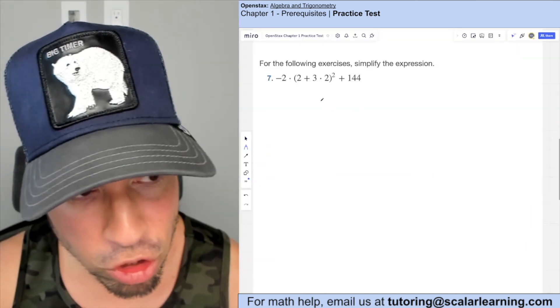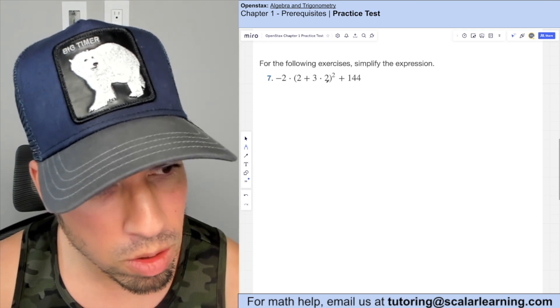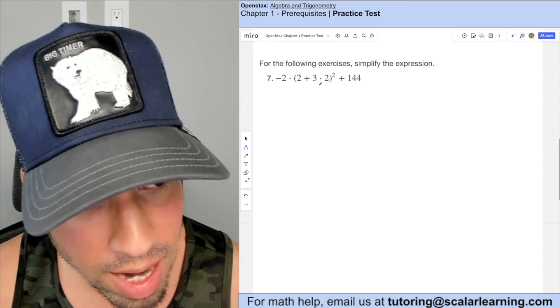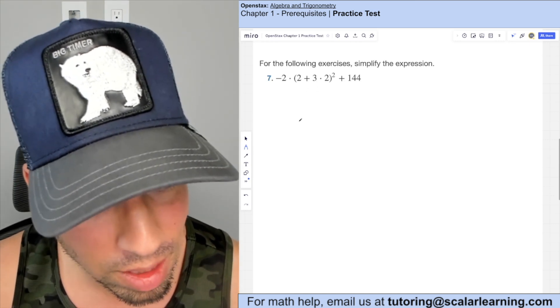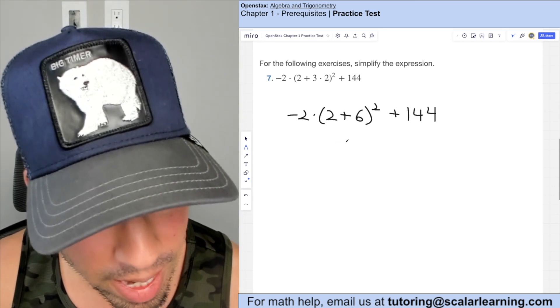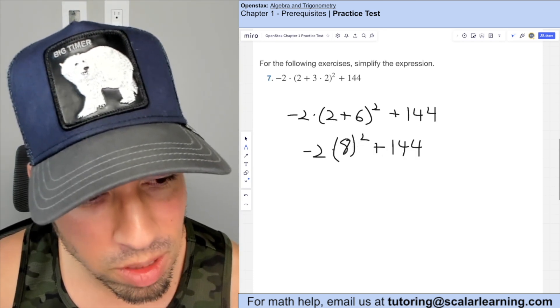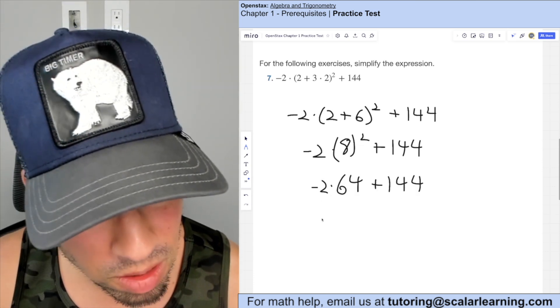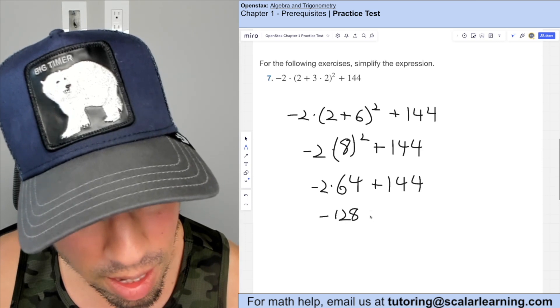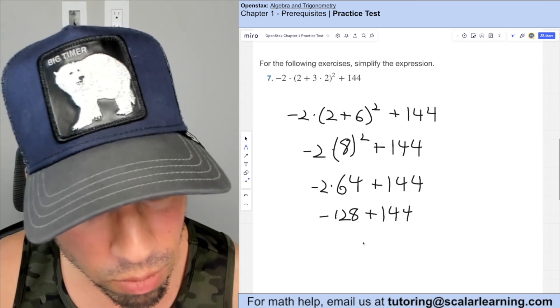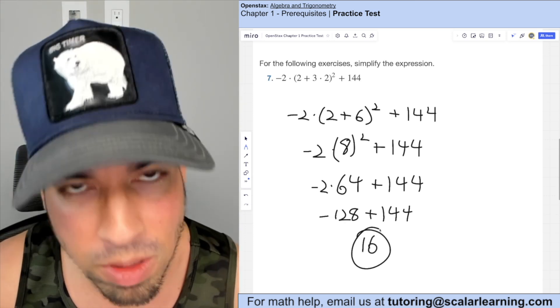Now, when we simplify here, we're just talking about order of operations. So I'm going to look inside the parentheses first and see I have multiplication and additions. We're going to tackle that multiplication first, which is three times two, which is six. So now I've rewritten it. Now let's go again. Parentheses two plus six gives me eight. Next, we're going to carry out the exponents. Eight squared is 64. Next is multiplication. Negative two times 64 is negative 128. And last but not least, we can finish the addition. Negative 128 plus 144 is positive 16. Boom, done.